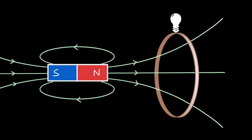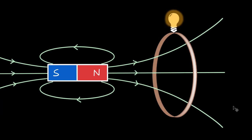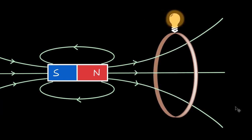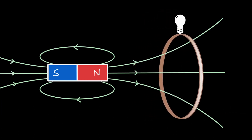If we move a coil in a region of magnetic field, let's say towards or away from this magnet, just like this, we can see the bulb glow. So that means there is some induced current in this coil and that means there is some induced EMF.